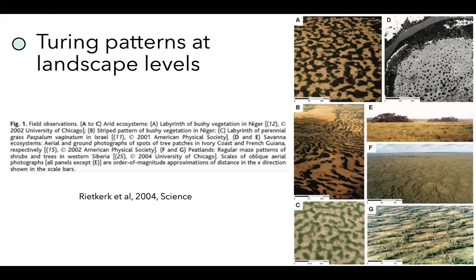Another student asks what reaction function Turing considered. The instructor clarifies: for linear stability analysis you use the linearized version, but for simulations Turing must have used nonlinear terms — because the linear analysis only shows instability exists, not where the system goes. Higher-order terms are needed to dampen growth from the unstable equilibrium. The numerical example in the paper explains this.